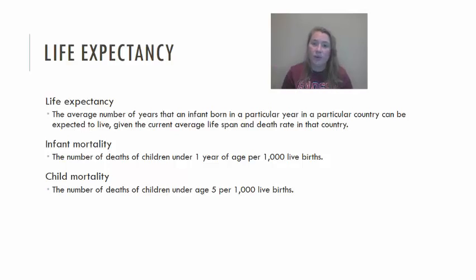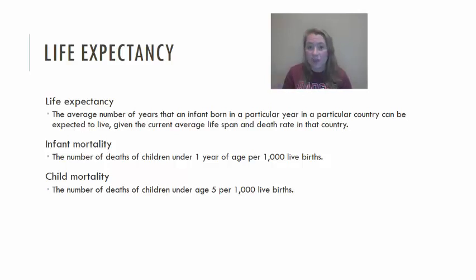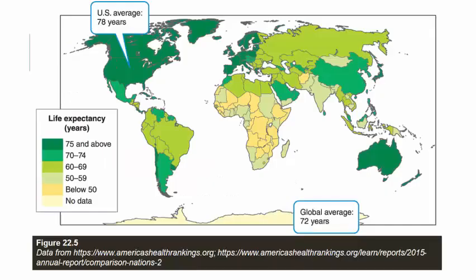You might think someone six years old is still a child, and yes, they are — but when looking at child mortality, most childhood diseases would kill a child before age five in locations without access to high levels of medical care. Looking at a map of life expectancy around the world, the locations that have high life expectancies also tend to have lower total fertility rates. When you expect to live longer, you're probably not going to have quite as many children.